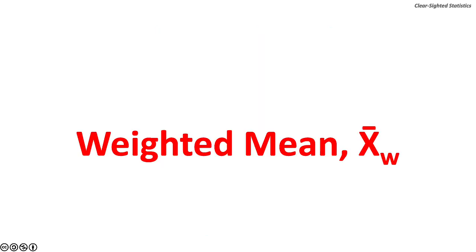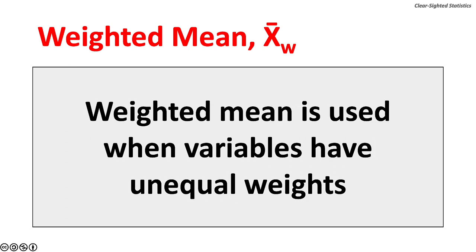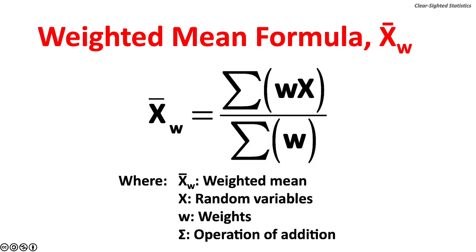The next measure of central tendency is the weighted mean, x-bar sub-w. With the arithmetic mean, each variable has equal weight. The weighted mean is used when variables have unequal or different weights. The formula for the weighted mean is the sum of the weights w times the random variables x, over the sum of the weights.